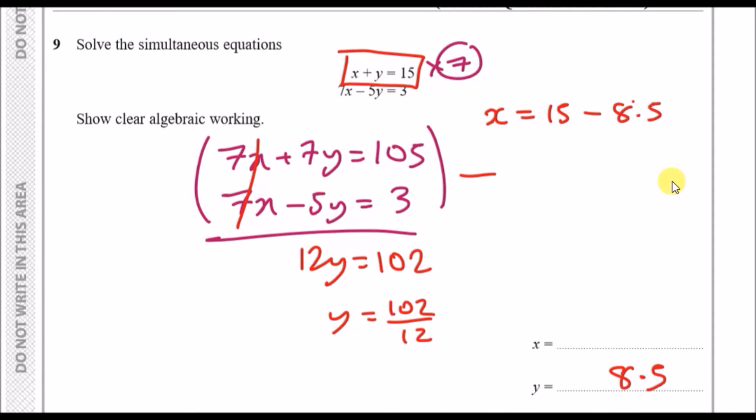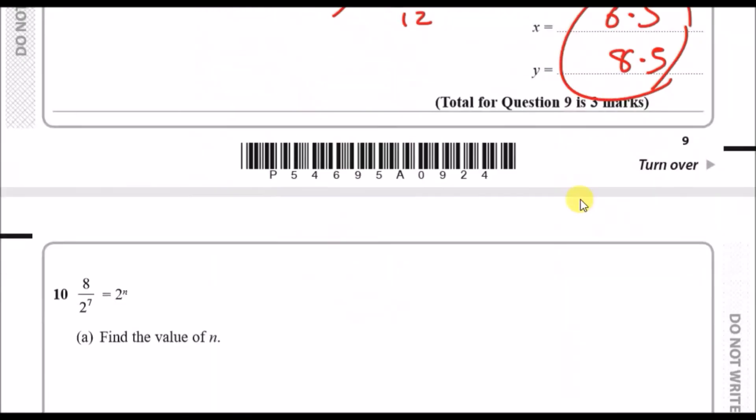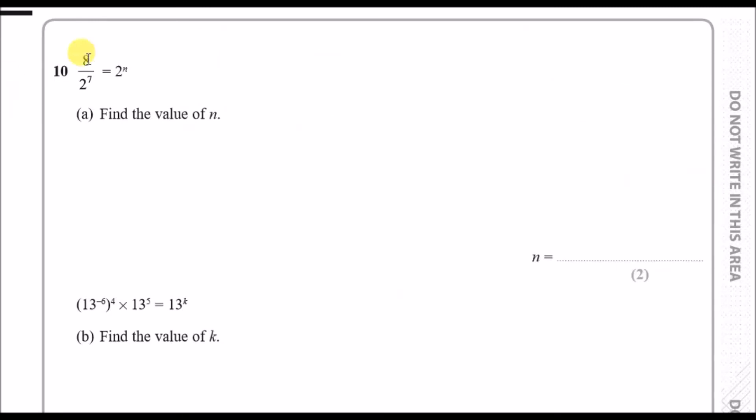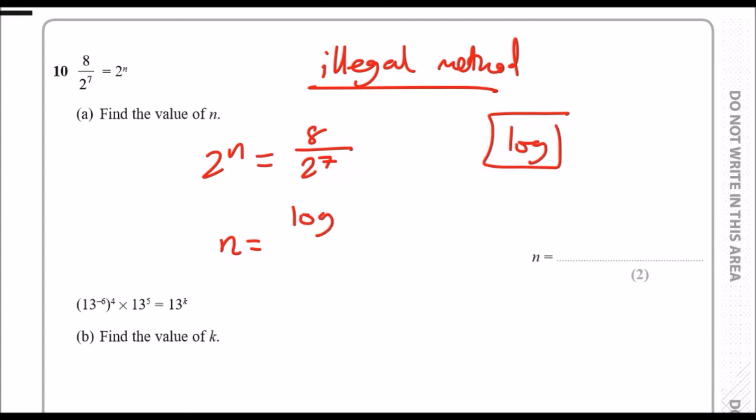This is another one of my favorite questions. Question 10: 8 over 2 to the power 7 equals 2 to the power n. Find the value of n. If you want to do this super fast, there's something I call the illegal method, and it makes this problem so easy it's unbearable. The trick is rewrite this as 2 to the power n equals 8 over 2 to the 7. Then notice there's a log button in your calculator.